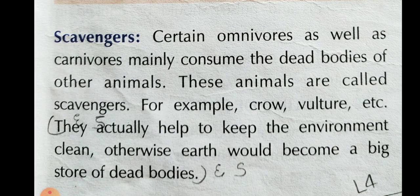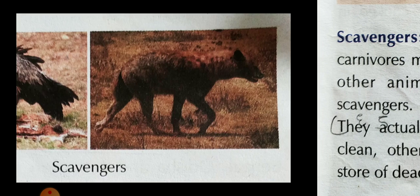The next heading is scavengers, means mritopojivi. Certain omnivores as well as carnivores mainly consume the dead bodies of other animals. These animals are called scavengers — safai karmi. For example, crow and vulture. They actually help to keep the environment clean; otherwise, earth would become a big store of dead bodies.